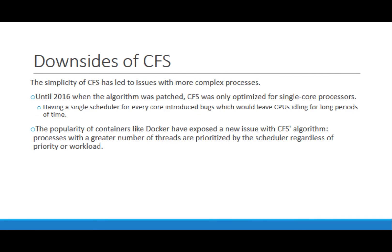The downsides of the Completely Fair Scheduler are in its simplicity. It's best used on a single-core processor running only a few processes, but once you introduce things like multi-core processors or containers like Docker, things get more complex. The scheduler was patched to improve performance with multi-core processors because there were multiple bugs due to how it interacted with load balancing, which would leave CPUs idling for long periods of time and decrease performance. The issue with containerized workspaces was that as programs like Docker became popular, a greater number of threads was prioritized by the scheduler regardless of priority or workload.